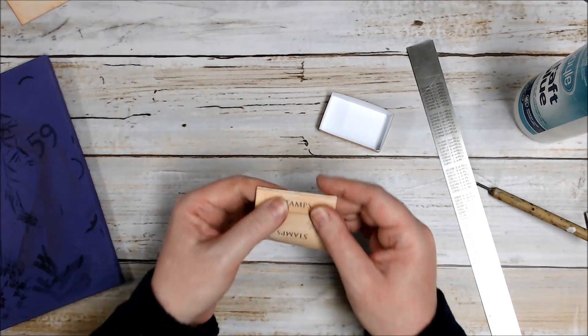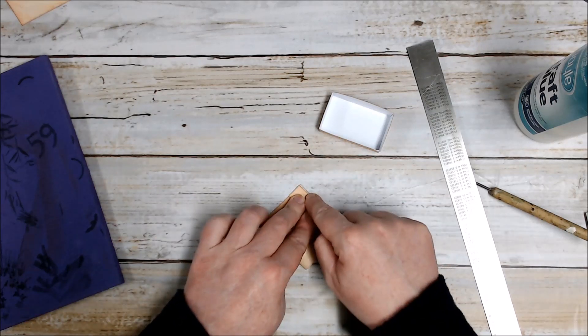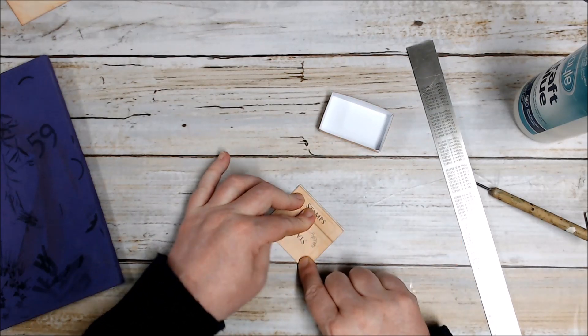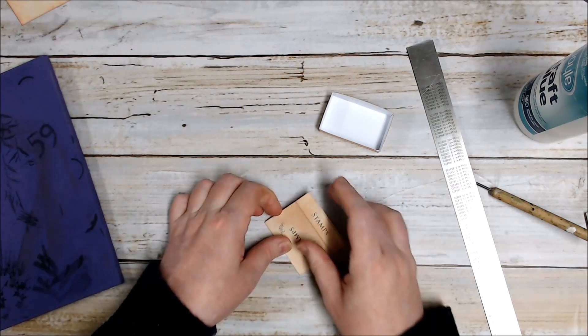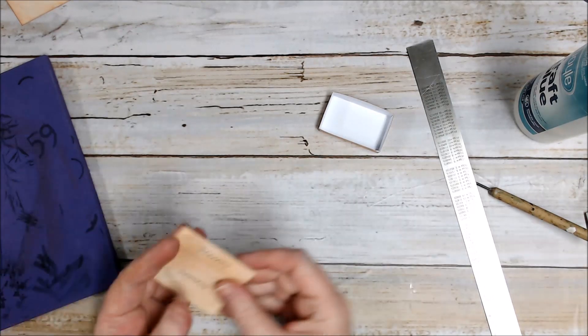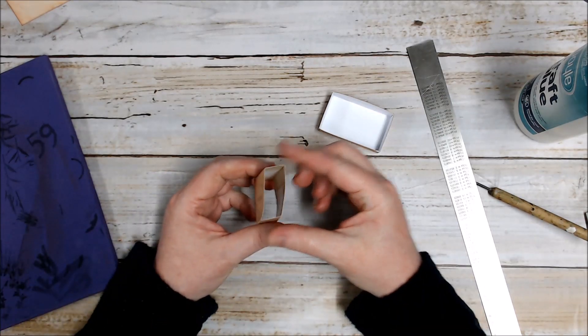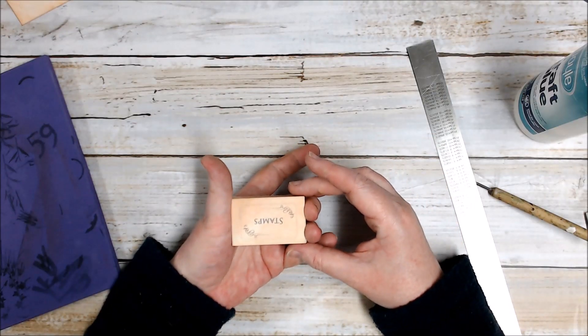Now once that's glued down I can fold it back the other way and I've got a little bit of extra paper that I can see along the edge here. So I'm just going to snip that off with my scissors. And now I have a little matchbox sleeve that my little matchbox fits perfectly inside.